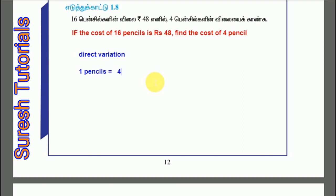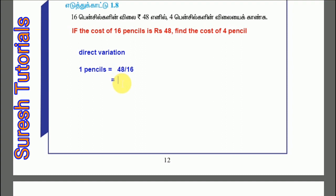48 divided by 16. So we will find the cost of 1 pencil. So which of 4 pencils — if we get 3 rupees per pencil, then for 4 pencils we multiply: 4 into 3 equals 12 rupees. So the cost of 4 pencils is 12 rupees.